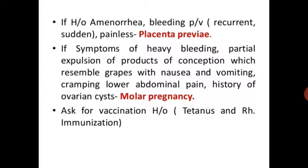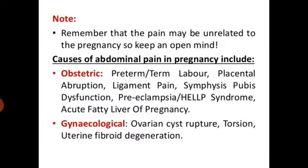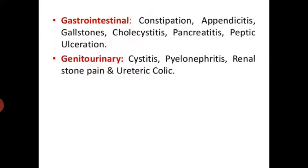If symptoms of heavy bleeding, partial expulsion of products of conception, signs resembling molar pregnancy with nausea and vomiting, cramping, lower abdominal pain, or history of ovarian cyst are present, signs of molar pregnancy should be assessed. Ask for vaccination history — tetanus and Rh immunization. Note results of all antenatal blood tests, routine and specific. Remember that pain may be unrelated to pregnancy — keep an open mind. Causes of abdominal pain in pregnancy include obstetrical, gynecological, gastrointestinal, and genitourinary causes.